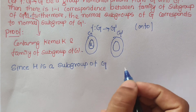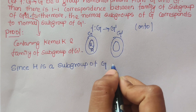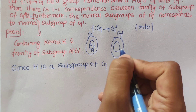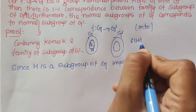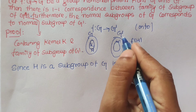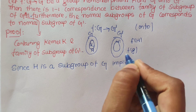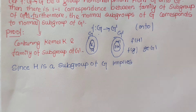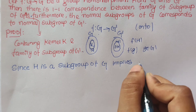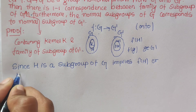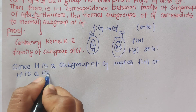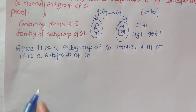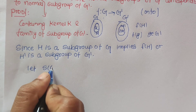Since H is a subgroup of G, this implies that elements of G' are in the form f(H). In h', every element that comes is in the form f(g) for g belonging to G'. So every element in H' comes in the form f(H). Therefore f(H), or H', is a subgroup of G'.